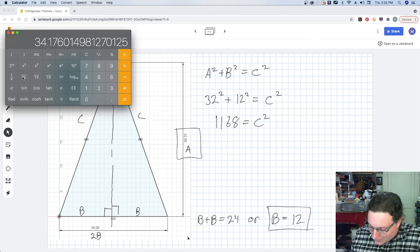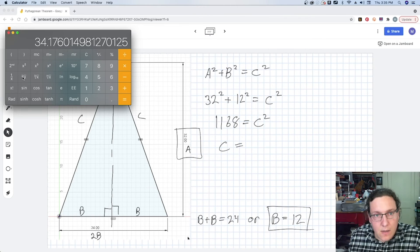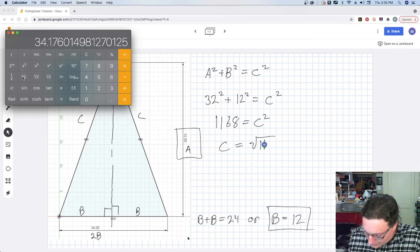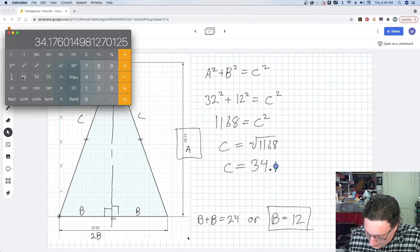You'll notice I'm not retyping anything in the calculator. We can see that C equals the square root of 1168, or C equals approximately 34.18.